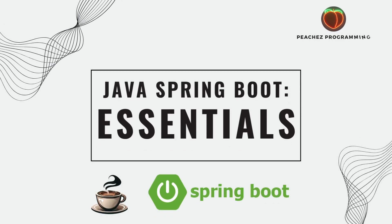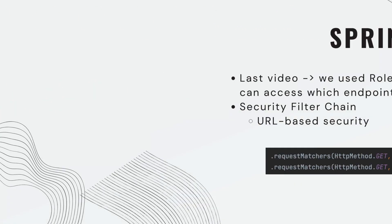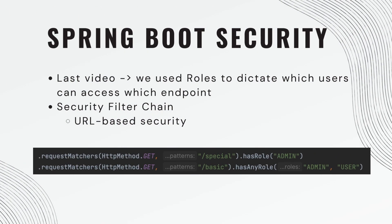Welcome back to Spring Boot Security. In the last video, we used roles to dictate which users can access which endpoint, and we did this in the security filter chain. This is technically known as URL-based security.